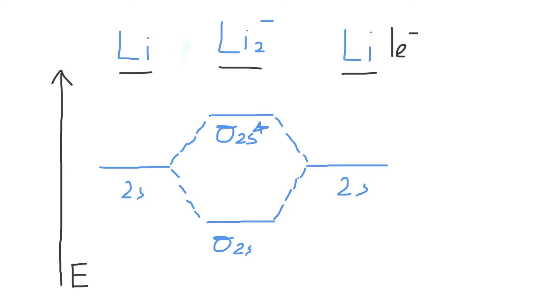So it doesn't matter which one you choose, but we'll choose the one on the left as Li minus the anion, which means that it'll now have two electrons.